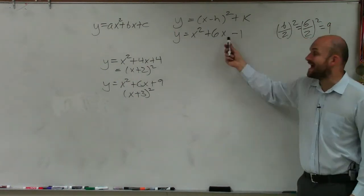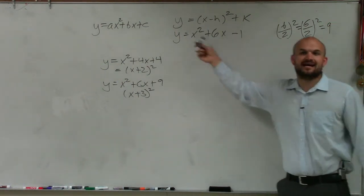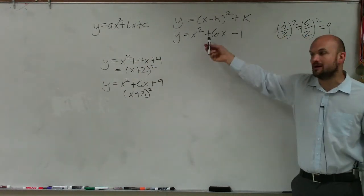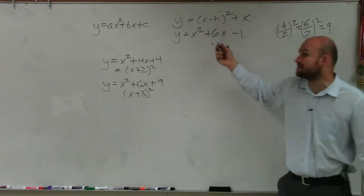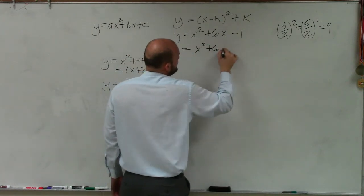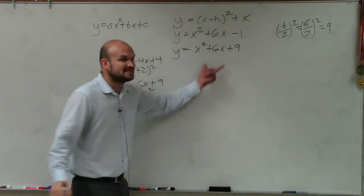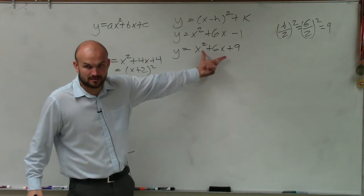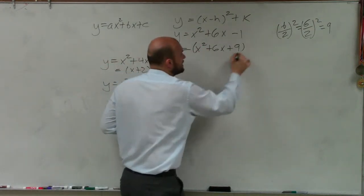Now what I'm going to do is I'm going to add a 9. And you could add 9 on both sides. Or what I'm going to do in this problem is add and subtract a 9 on the same side. So I have y = x² + 6x + 9. This is a perfect square trinomial, correct? So what I'm going to do is I'm going to put that in the brackets.